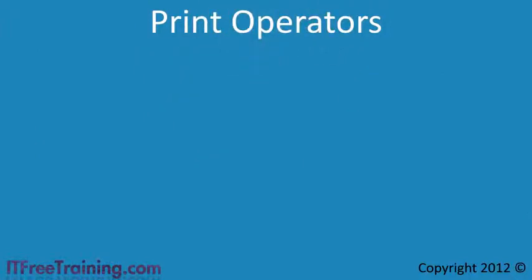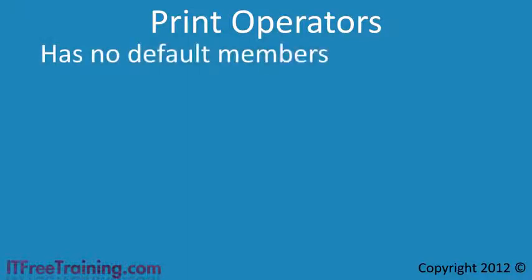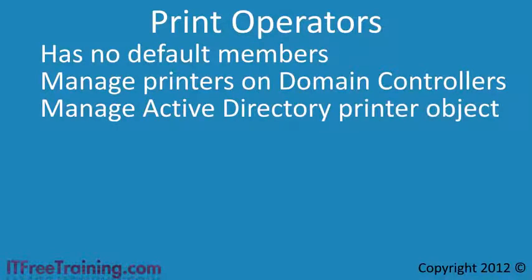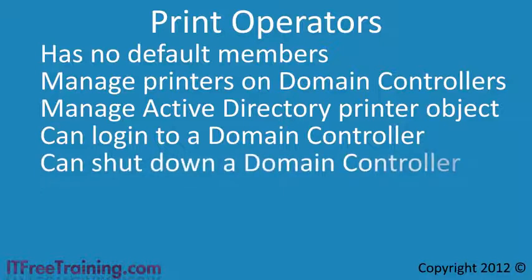The next group is the Print Operators group. This group by default does not have any members. Members of this group can manage printers on domain controllers, including adding and removing printers and managing print jobs. Active Directory allows printer objects to be created in Active Directory, associating a printer with a user account, and a print operator can manage these printer objects as well. Members of the Print Operators group can also log in locally to a domain controller and shut it down. You should be careful who you put in this group, and note that since this group can add printer drivers to a domain controller, a buggy driver could cause the domain controller to become unstable. The scope of this group applies only to domain controllers.